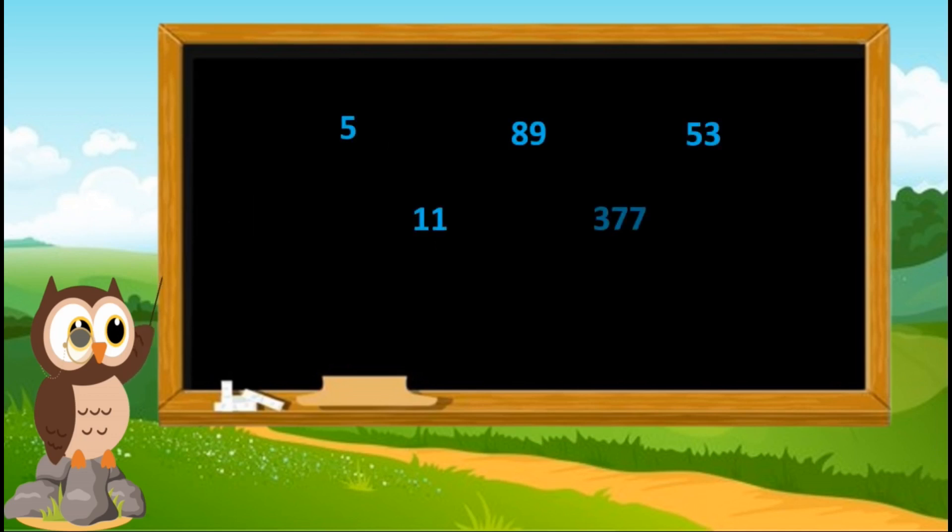Here we have some numbers. Let's look at the last digit of these numbers. All these are odd numbers as these are ending with either one, three, five, seven, or nine.